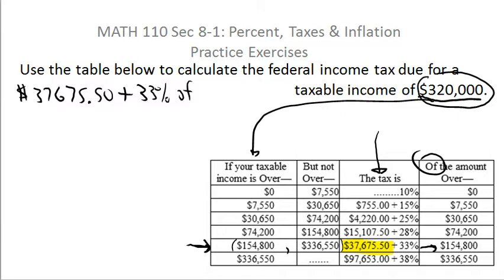So what you have to do is take how much the taxable income went over this amount by. Well you find out the difference, how much something went over by, by subtracting. So if you take the $154,800 and subtract, that's the difference. So it's 33% of the difference or the amount over $154,800.